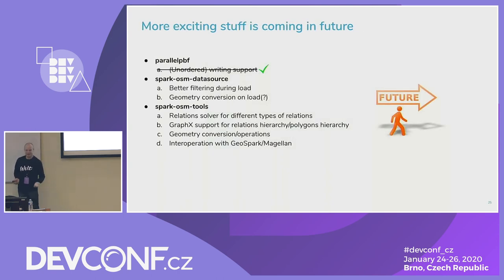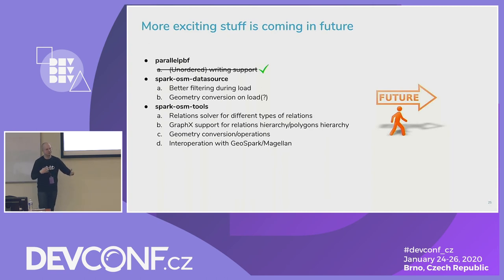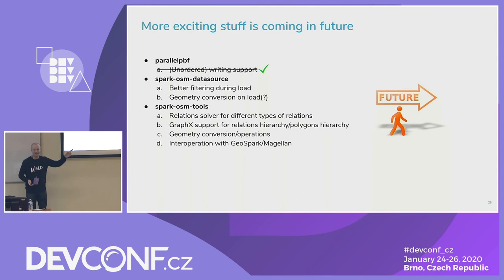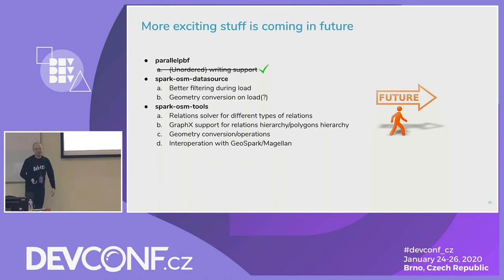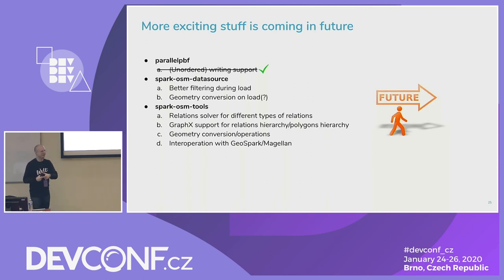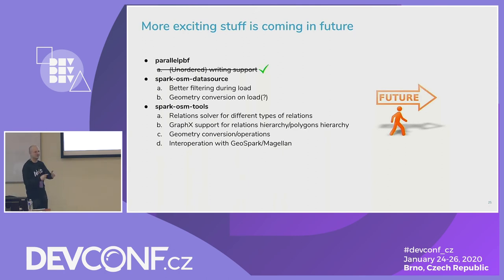The stuff is not yet finished. First: writing support for parallel PBF — it will produce unordered files since writing happens in parallel threads, but since we can read back into memory it's not a big deal. It's partly done — I wrote half of it in seven hours of travel from Helsinki to Brno. For the Spark OSM data source, I need to implement pushing down Spark filters so you don't read what you don't need, and possibly geometry conversion on load. I'm still thinking about whether to do it on load or not.